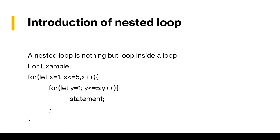A nested loop is nothing but a loop inside a loop. For example, here we have a for loop with variable x, then we have condition 5 and then we increment. And inside this for loop, we have another for loop with variable y, then we have the same condition less than or equal to 5, then increment, then we have one statement.